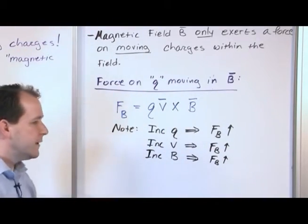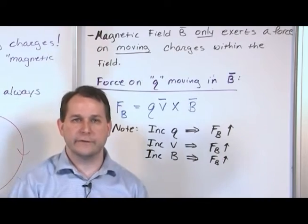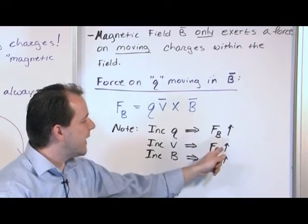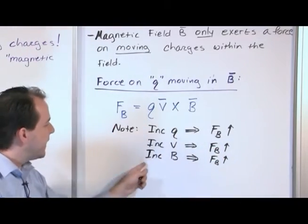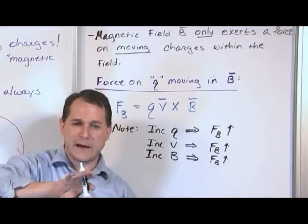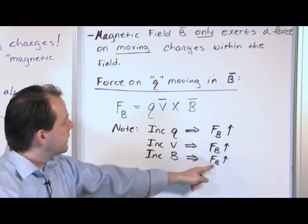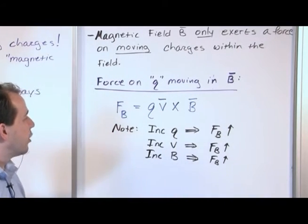If I make the charge stronger, then it's going to be pushed harder when it goes through the field. If I speed it up and make it go faster through the field, then I'm going to have a stronger force acting on it. And if I increase the field strength itself, I turn my magnetic field meter up, or my magnetic field strength up, then I'm going to have a stronger force on it as well.